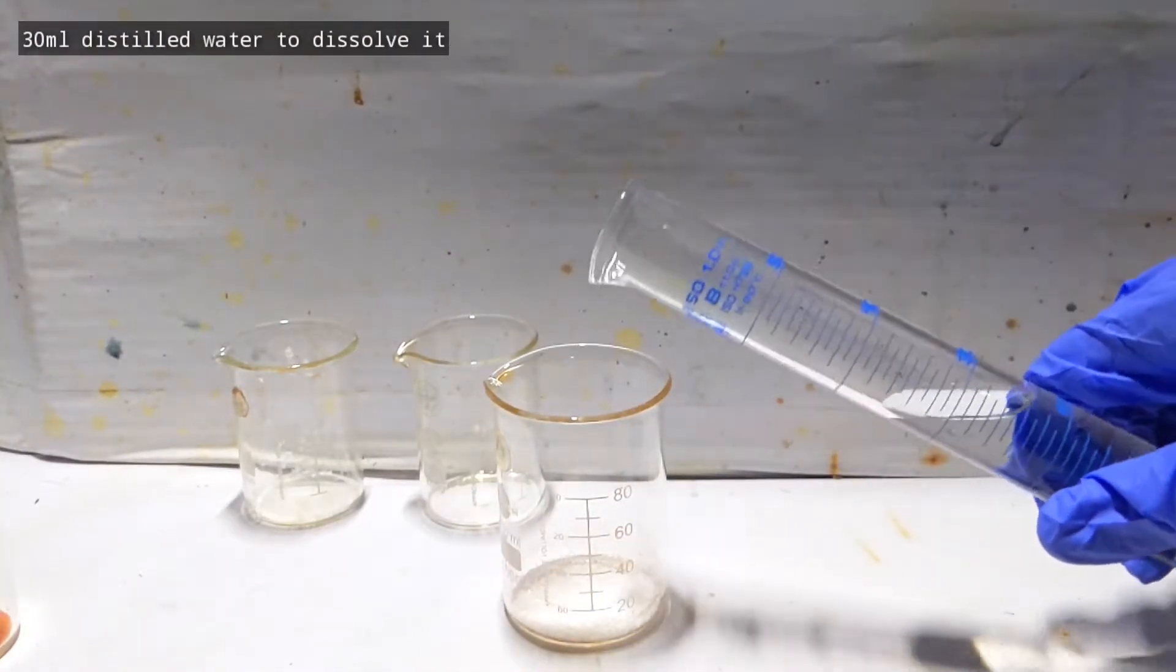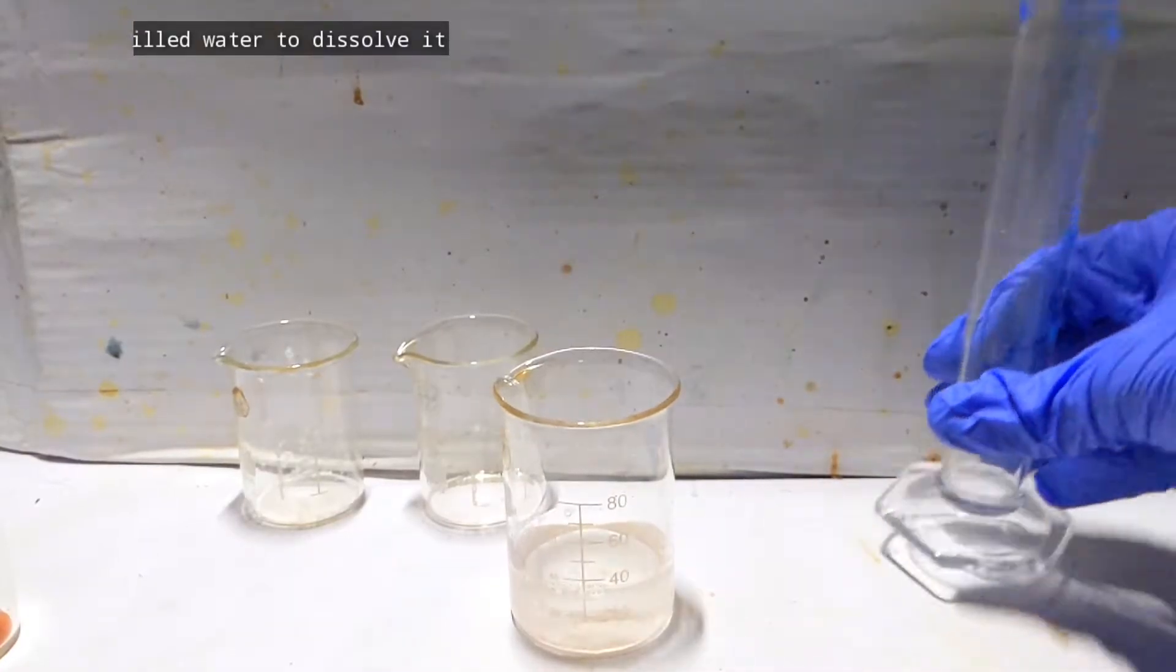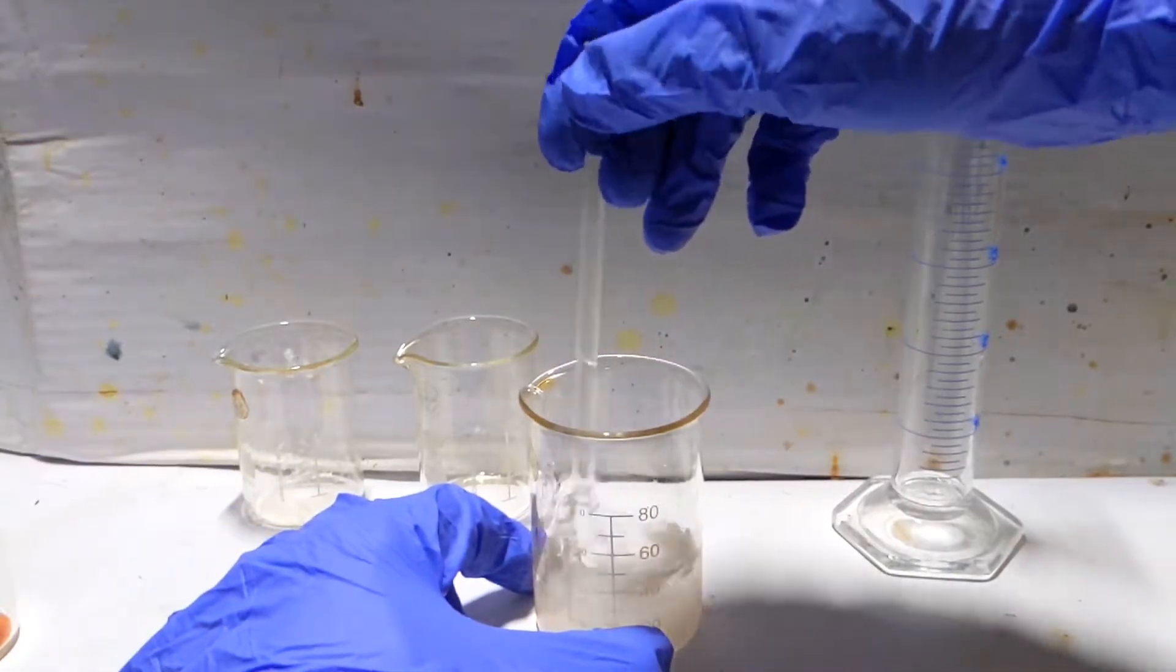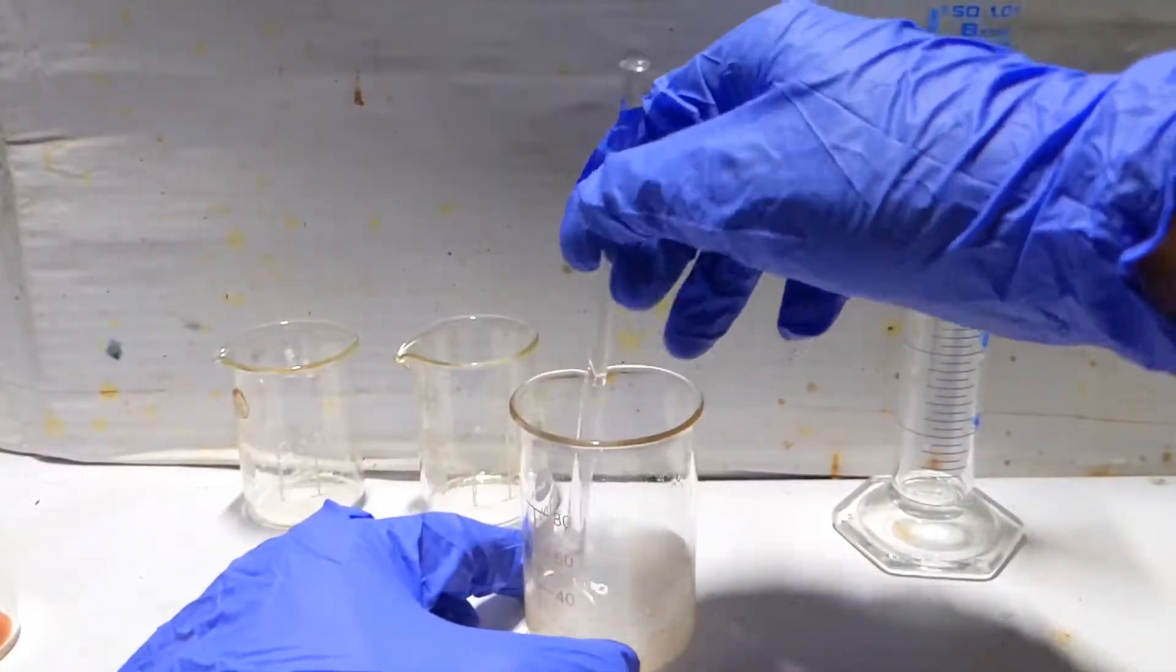30 milliliters of distilled water was then taken in a graduated cylinder and transferred to the beaker. A glass stirring rod was then used to mix up the contents. Both compounds dissolve in water, resulting in a colorless clear solution.